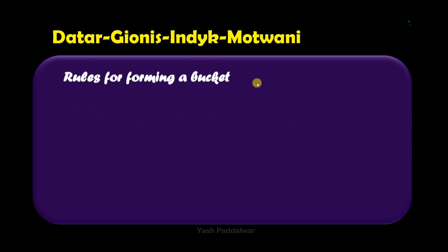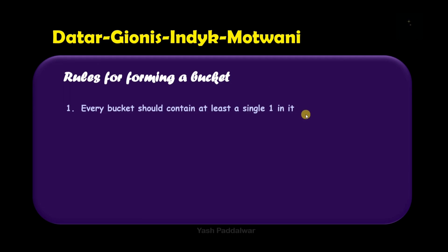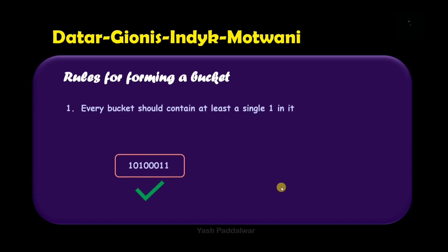Now let's look at the rules and regulations we need to follow while forming a bucket. Bucket formation can be confusing, but I will make it very clear and simple by the end of this video. The first rule is that every bucket should contain at least a single one inside it. A valid bucket will always contain at least one '1'.